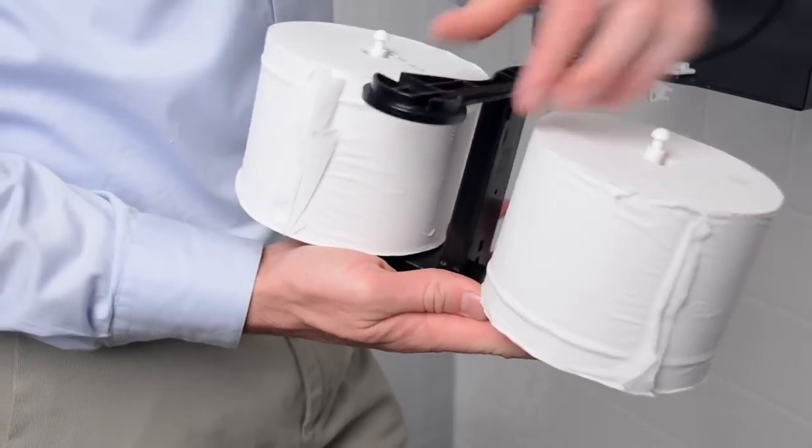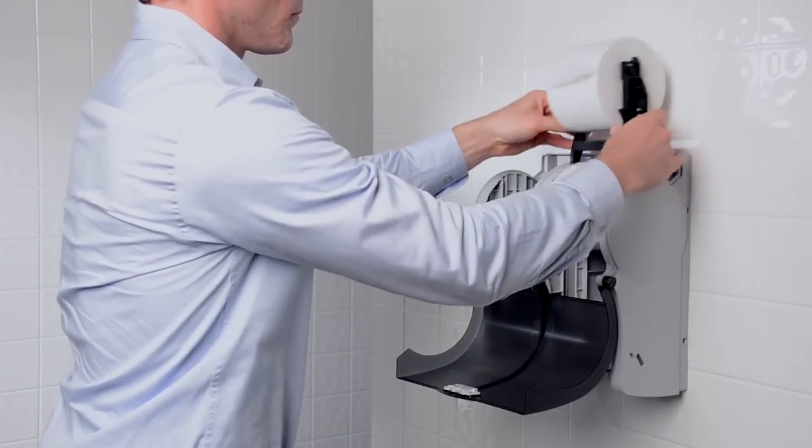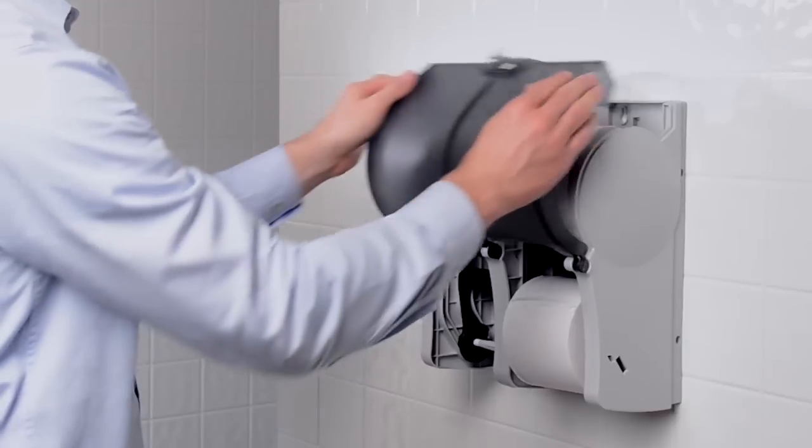Be sure to keep the tissue flap pressed against the top roll to prevent double feeding. Place the mandrel back into the dispenser and close the lid.